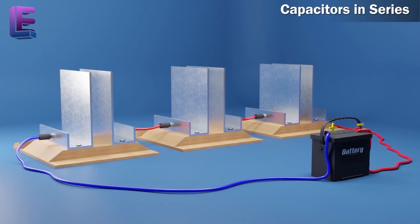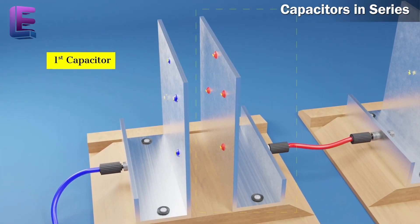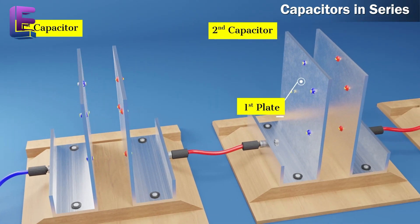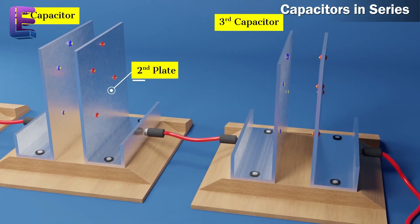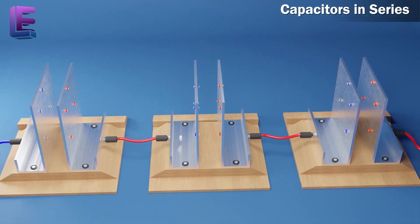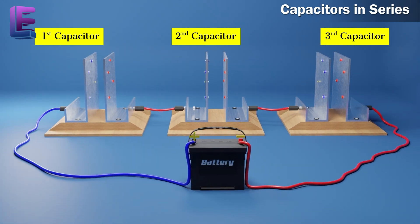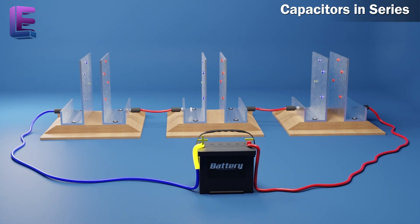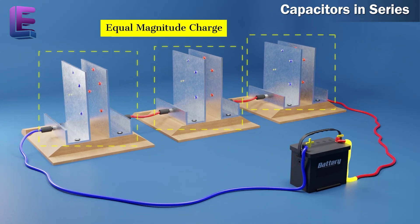Capacitors in series. In a series circuit, capacitors are connected to each other one behind the other. The second plate of the first capacitor is connected to the first plate of the second capacitor. Similarly, the second plate of the second capacitor is connected to the first plate of the third capacitor, and so on. Finally, the first plate of the first capacitor and the second plate of the last capacitor are left, and these are connected to the positive and negative poles of the battery.